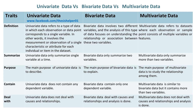Univariate data refers to a type of data in which each observation or data point corresponds to a single variable. In other words, it involves the measurement or observation of a single characteristic or attribute for each individual or item in the data set.